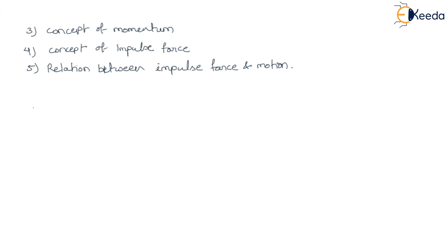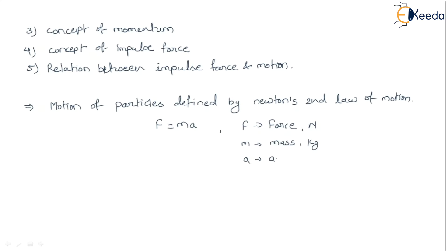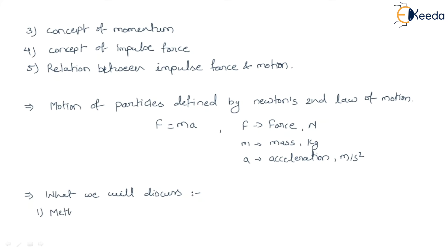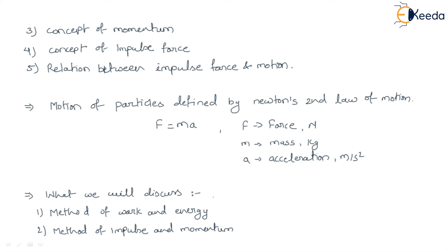The previous concepts were based on the motion of a particle, which we usually determine by Newton's law of motion, specifically Newton's second law. Newton's second law is F equals MA, where F is the force, M is the mass, and A is the acceleration. Now here we are going to discuss about the method of work and energy and the method of impulse and momentum.